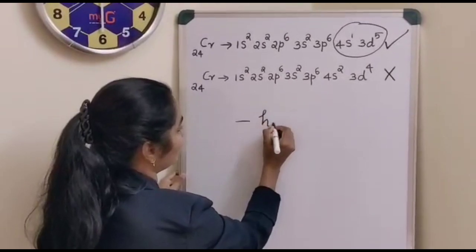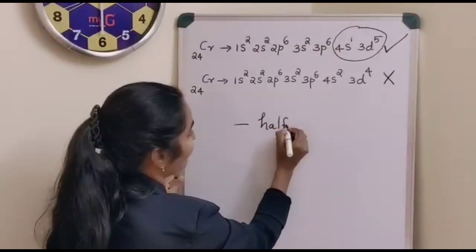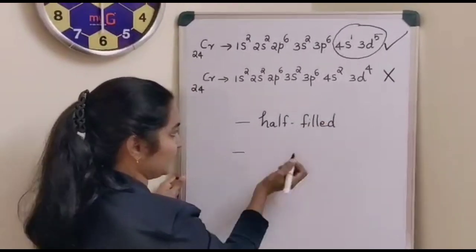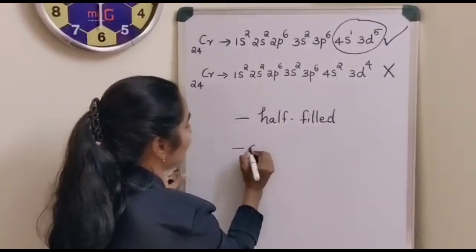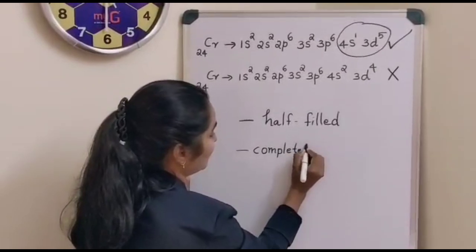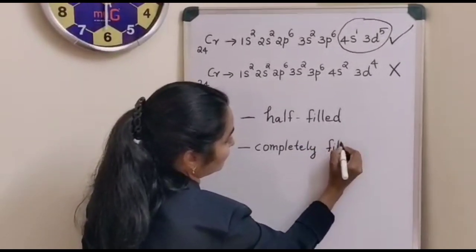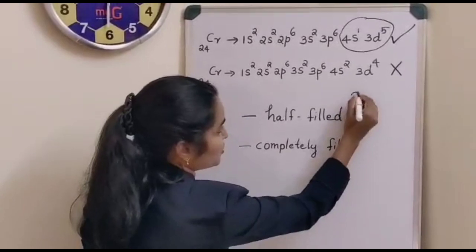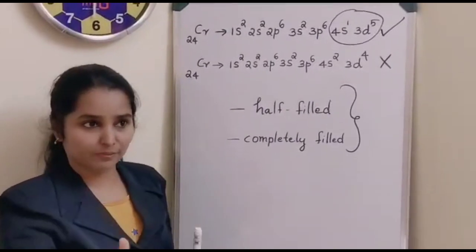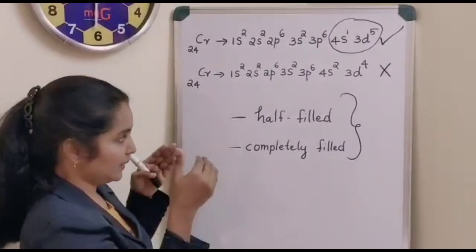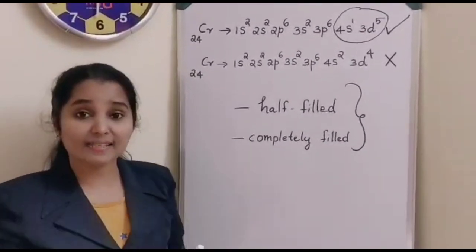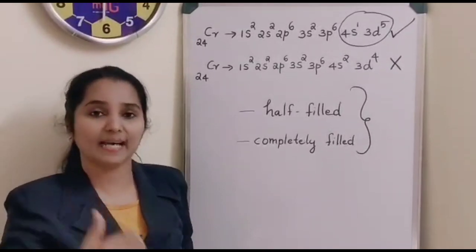This exceptional behavior explains the extra stability offered by half-filled and completely filled orbitals in an atom. There will be extra stability if the outermost shell is half-filled or completely filled — that atom acquires extra stability than expected.